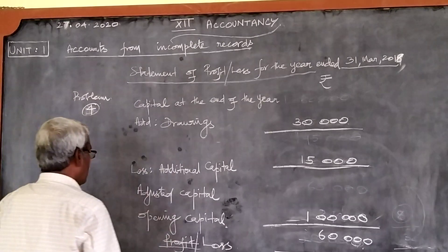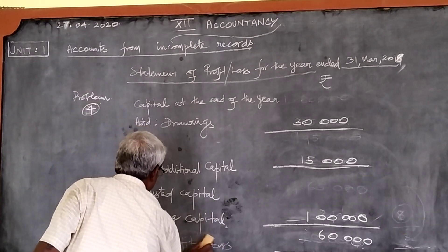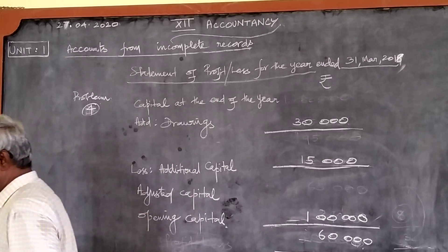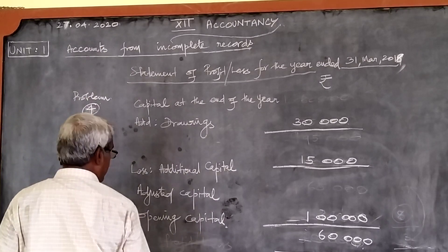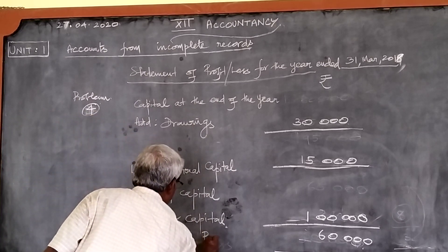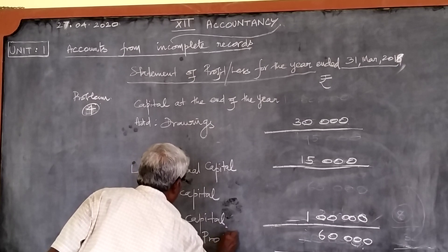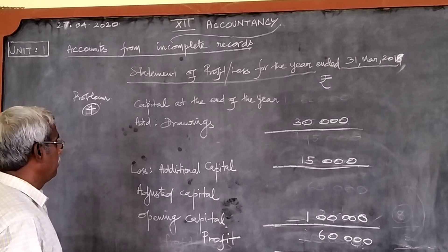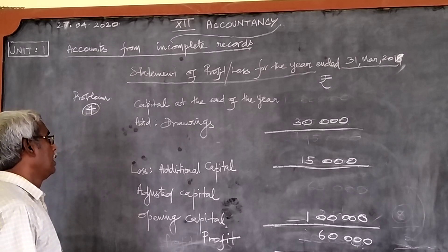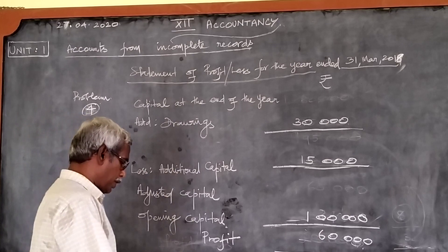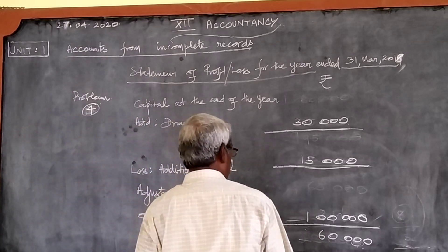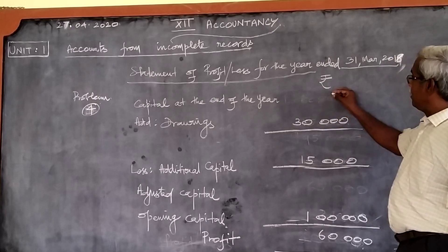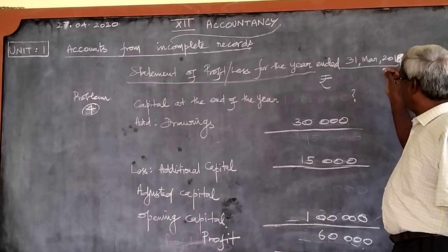So what are the data available in this problem? I have substituted the figures in proper places. In this problem, unlike the last problem where loss was given, the profit is given. What is missing? We should find what is missing in this problem. The very first item is missing, so we should find this.